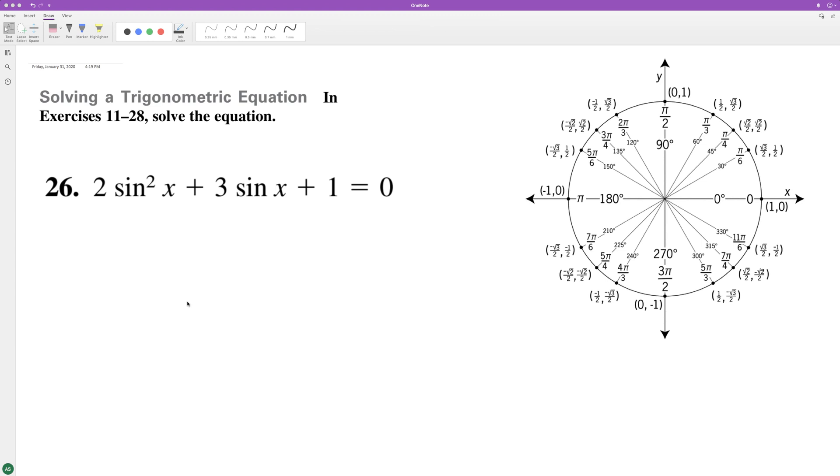Let's solve this problem for x. We're going to factor this out. So we're going to have 2 sine of x plus 1 and sine of x plus 1 equals 0.